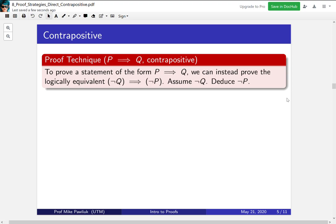Another technique is to use what's called the contrapositive. So if we want to prove a statement of form P implies Q, you can instead prove the logically equivalent statement not Q implies not P. How would you do this? Well, this is still an implication. So you would start by assuming not Q and then deducing not P after a series of logical, justified steps.